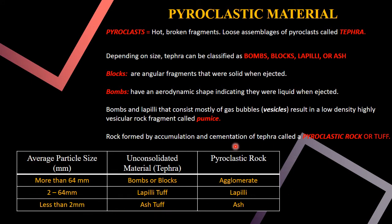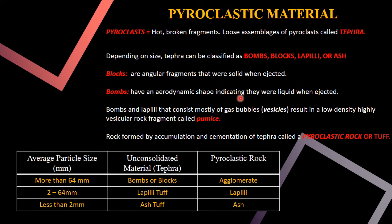A size classification table shows: bombs and blocks are more than 64 mm (pyroclastic rock: agglomerate); lapilli and lapilli tuff range from 2 to 64 mm; and ash is less than 2 mm. In summary, pyroclasts form tephra of three types — blocks (solid when ejected), bombs (liquid when ejected with aerodynamic shape), and lapilli — and their cementation produces tuff.